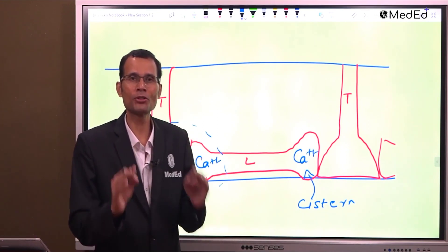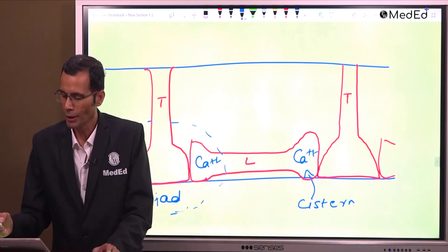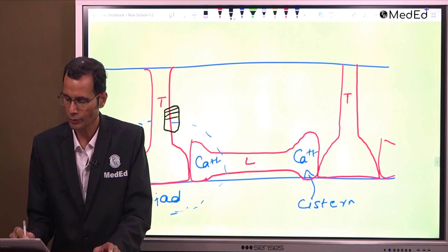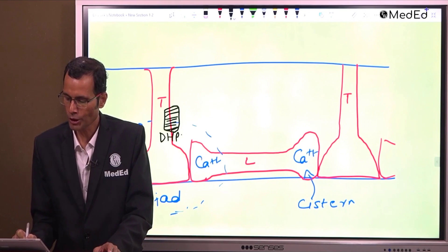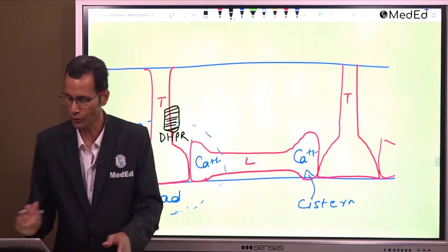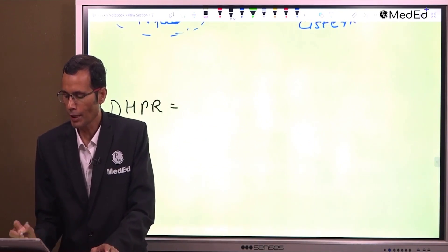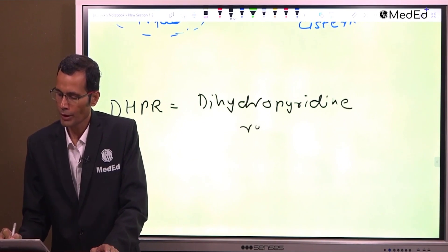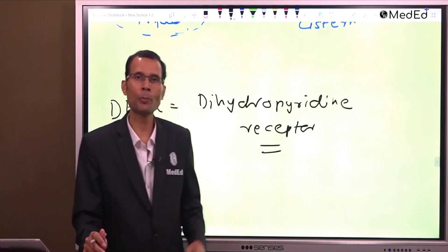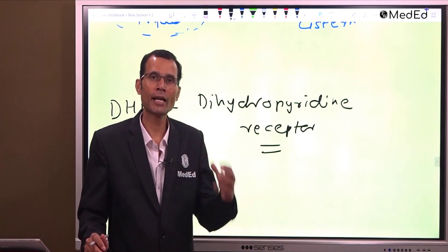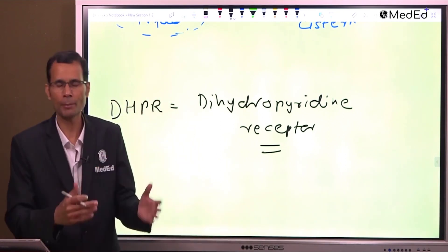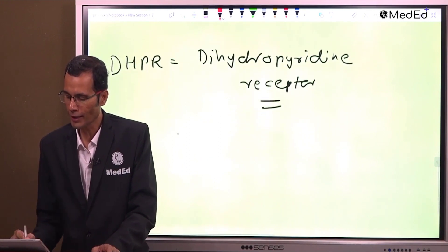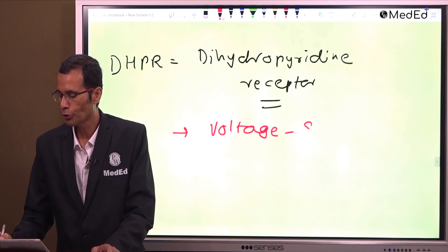Now coming to the most important aspect of this discussion. In the membrane of the T-tubules, we have a protein called DHPR — dihydropyridine receptor. There is a category of drugs called dihydropyridines, and they are a type of calcium channel blockers. DHPR has a voltage sensing mechanism — it has a voltage sensor.